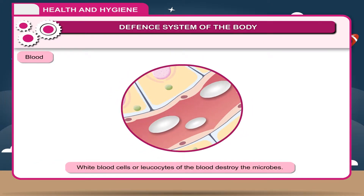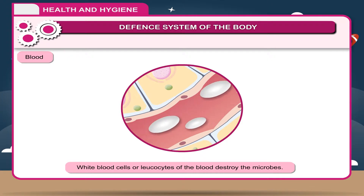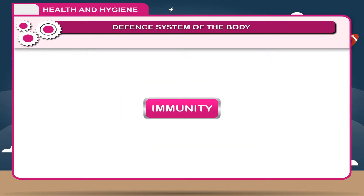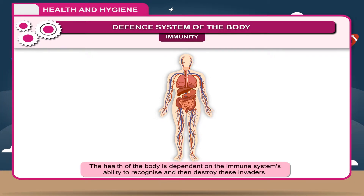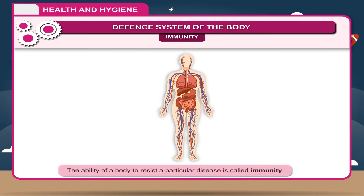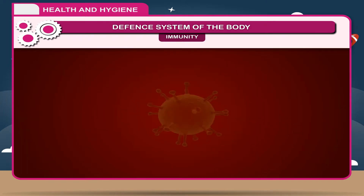Blood — white blood cells and leukocytes of the blood destroy the microbes. Immunity — our body has another system of defense against diseases called the immune system. The health of the body is dependent on the immune system's ability to recognize and then destroy these invaders.